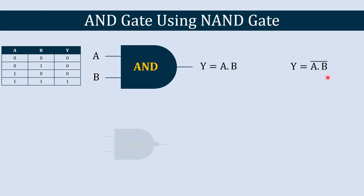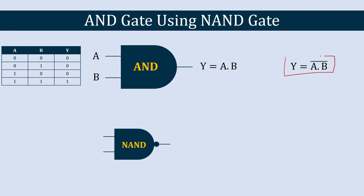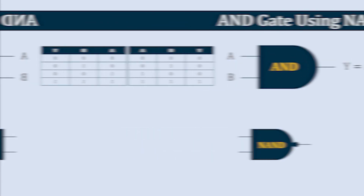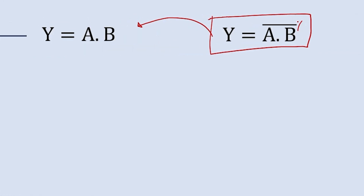Our aim is to use the NAND gate to produce the same output as an AND gate. The NAND gate gives Y = (A·B)̄, but we want Y = A·B. So we need to modify the equation — if we just remove the bar we get Y = A·B. The question is: how do we remove that bar?